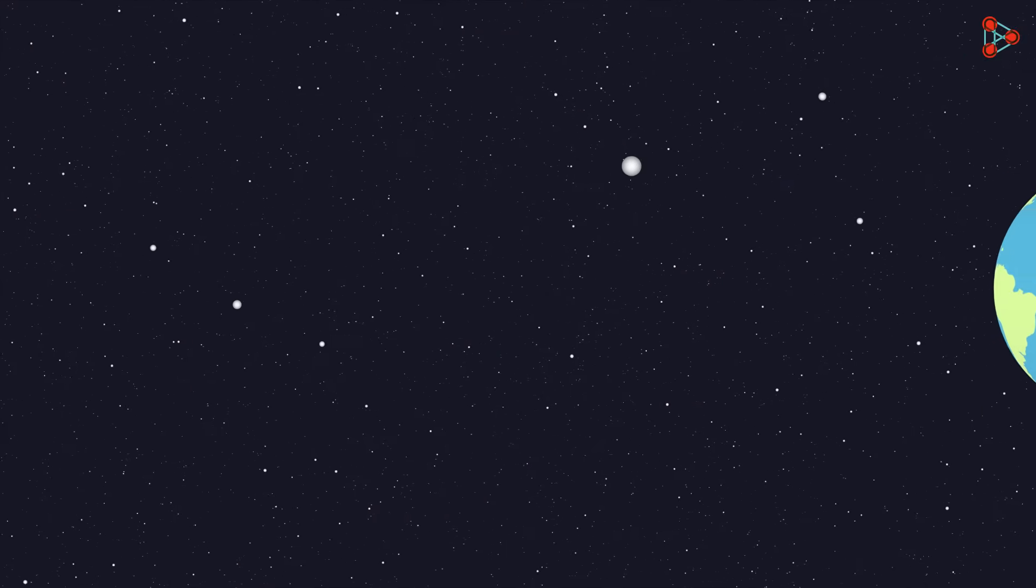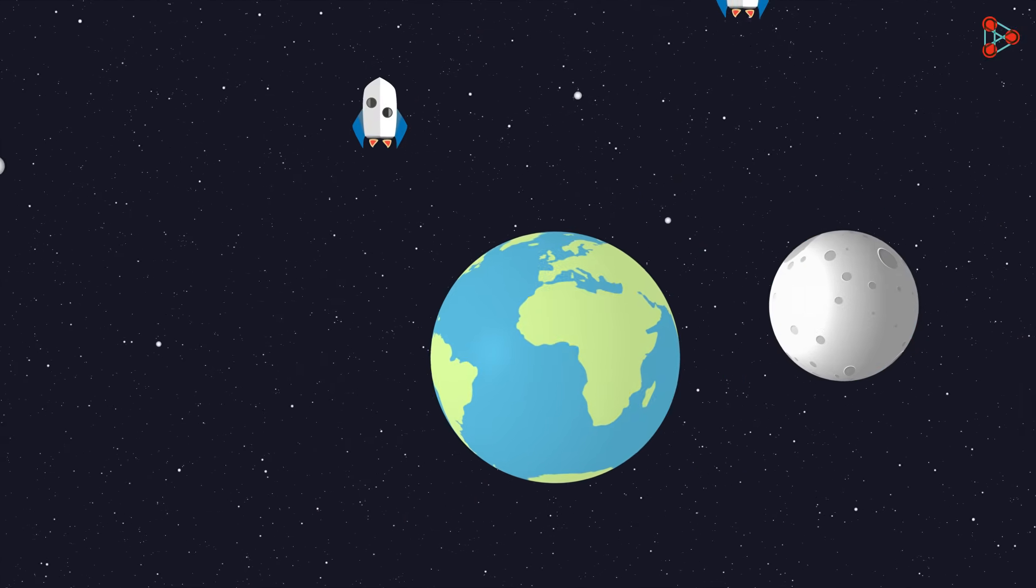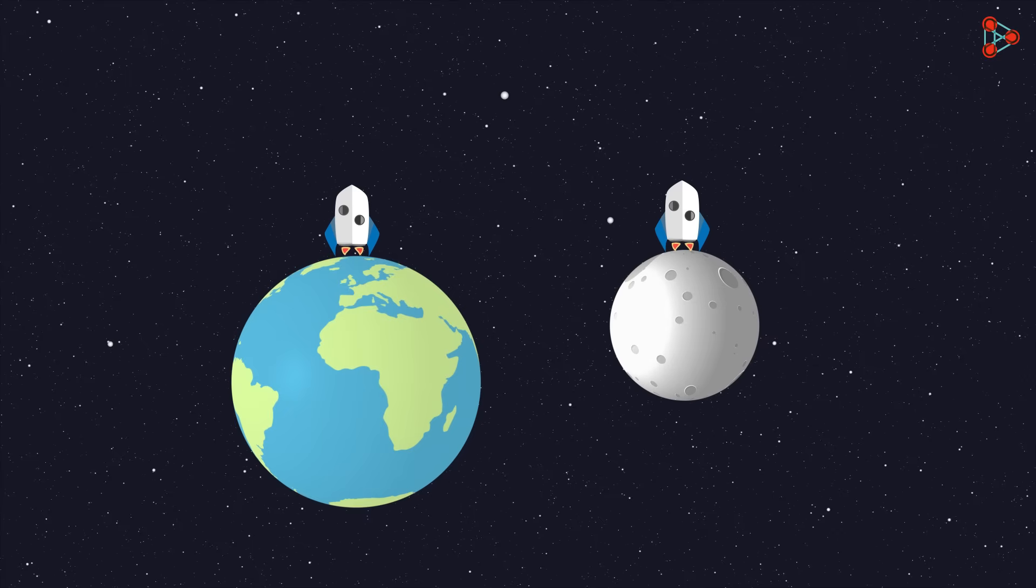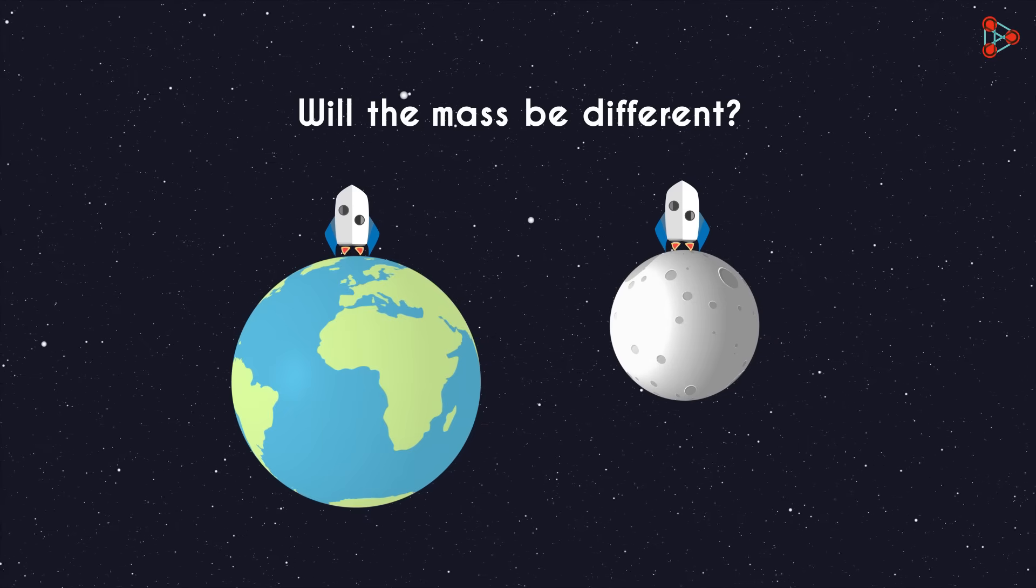Now consider two situations. One in which an object is on the earth, and second in which the same object is on the moon. Will the mass of the object be different in these cases?